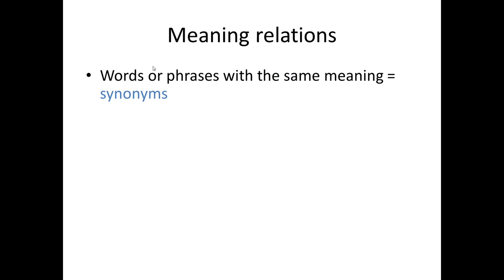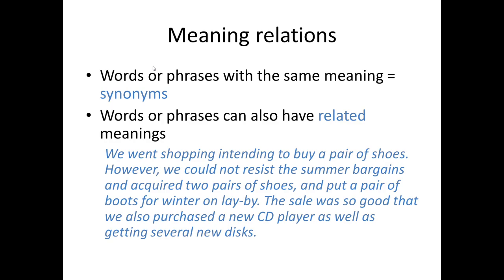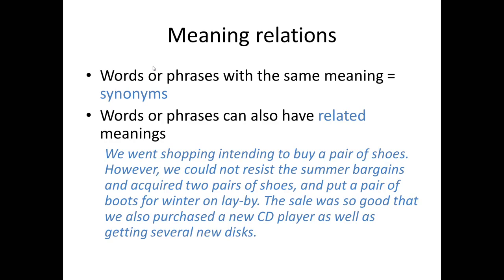When words or phrases have the same meaning, we say that they are synonyms. For example, 'big' and 'large' are synonyms — they are two different words with the same meaning. Synonymy is one type of meaning relation. Sometimes words or phrases don't have the same meaning but related meanings, and this is another meaning relation. By choosing words or phrases with the same or similar meanings, we can help make a text cohesive.